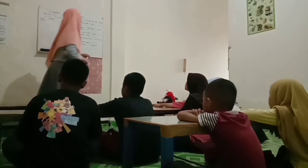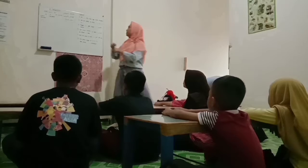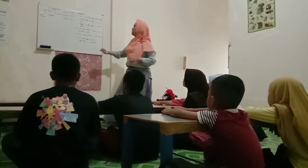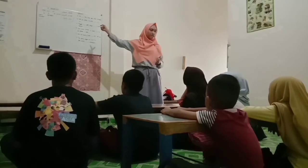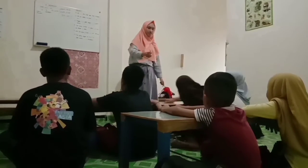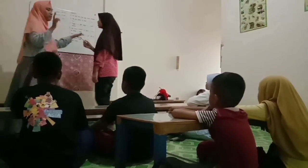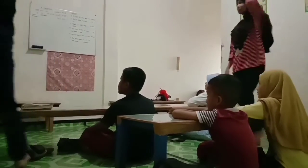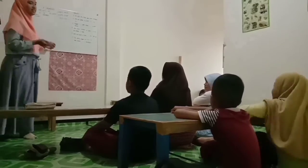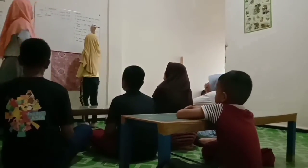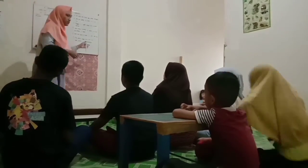Now we will do an exercise. The first question: 'Mr. and Mrs. have 3 children.' Who knows the answer? Okay, number 2. Number 3 — Natasha. Number 4. We will discuss together until all are answered.